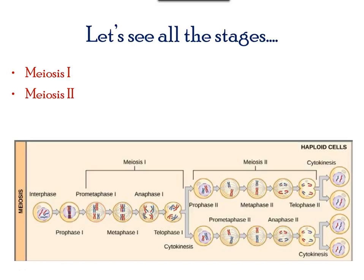Here is a summary of all the stages in meiosis. During interphase, chromosomes start appearing, followed by pairing of the homologous chromosomes in prophase I, followed by meiosis I, and soon after telophase I and a brief cytokinesis, meiosis II follows up. Make sure to spend some time drawing these diagrams, as this will help you understand the difference between the two cell divisions.